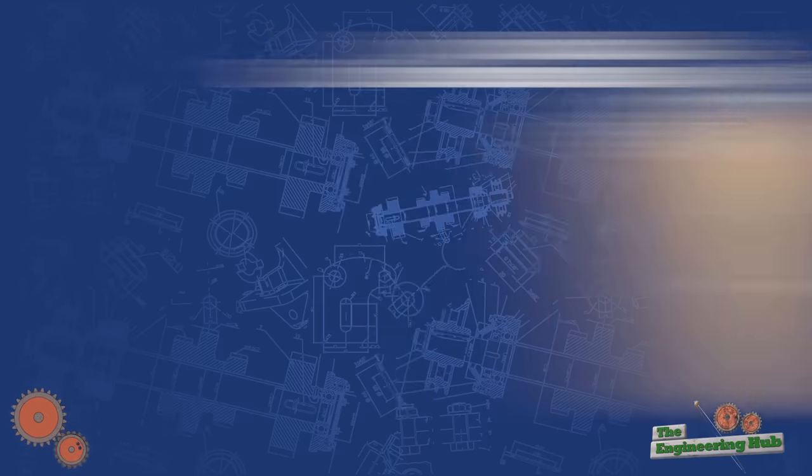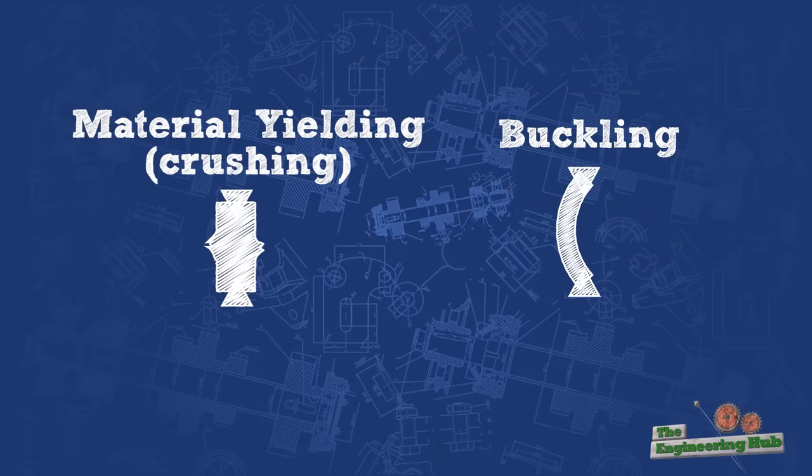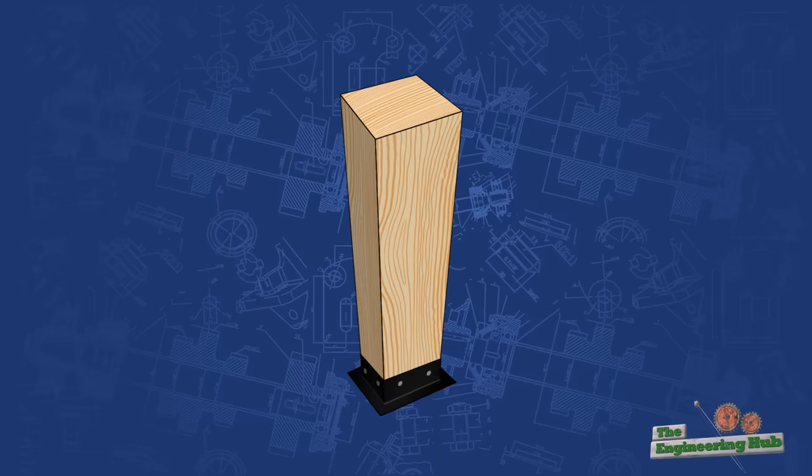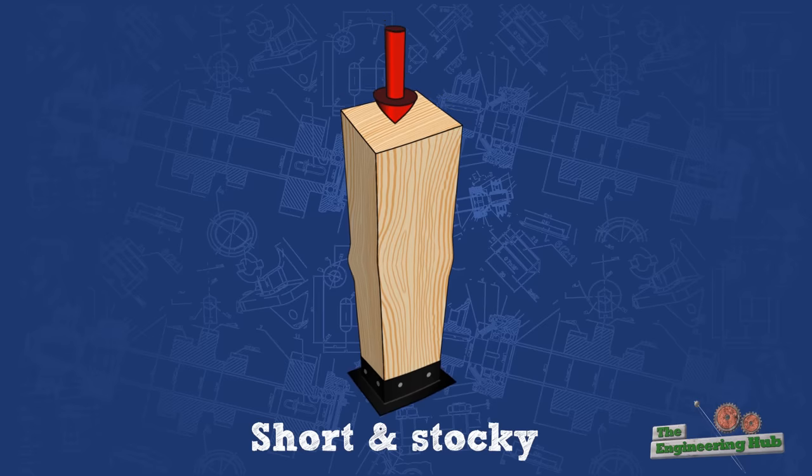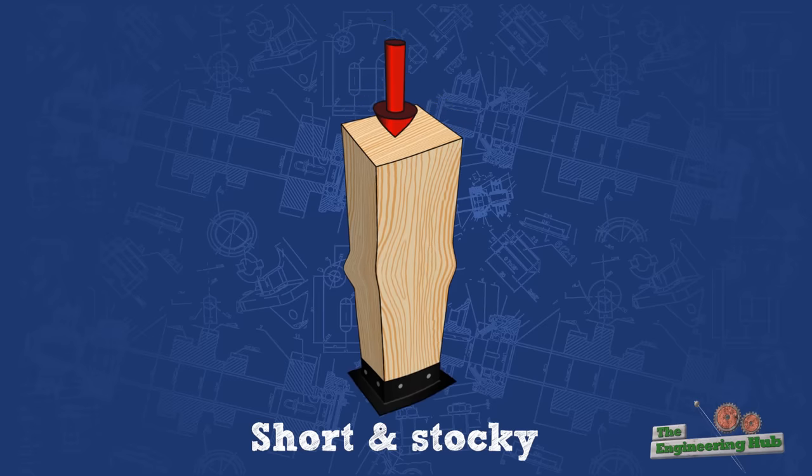In general, a column can fail in two main modes: buckling or material yielding and crushing. Material crushing can be seen only on short and stocky columns. This failure consists of the wood grains being compressed to the point where they start to wrinkle locally.